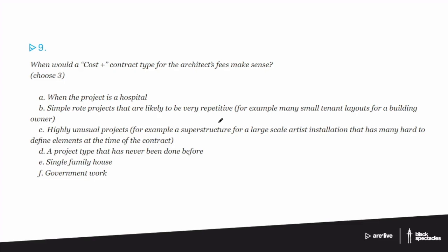A cost plus is a situation where you say: here are all of our costs that we've gone through to do this project for you, and the plus is we also want a little bit of profit at the end. So you're essentially saying it took us X number of hours, this is how much we charge per hour, these are all of our other costs, and you're going to give us 8% profit — something like that.